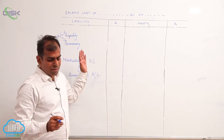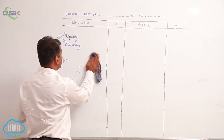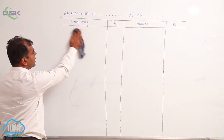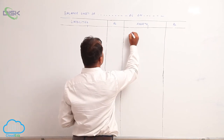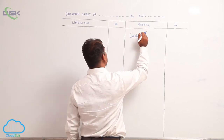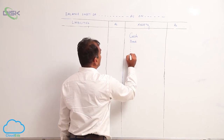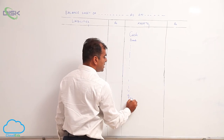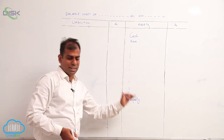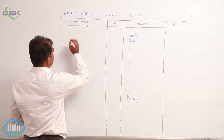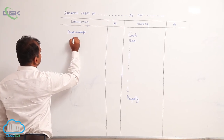Now let us see what is order of liquidity. Liquidity means the ability of an asset to get easily converted into cash. All assets which are in cash form or near cash form are written on top. Usually we start with cash, then bank, and the most illiquid asset — such as land and building — are written at the end. This is called order of liquidity.